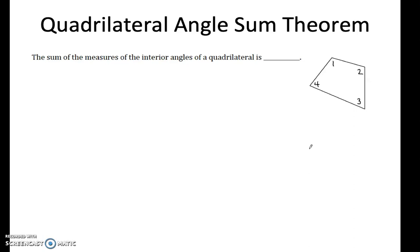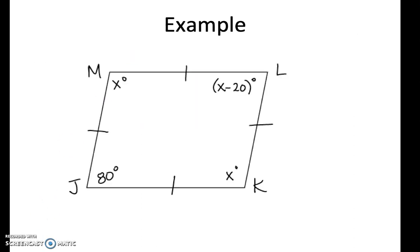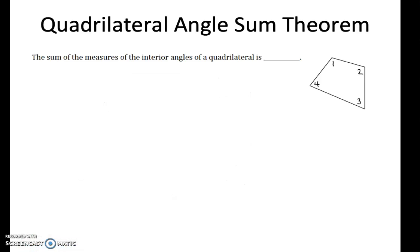One of the most important theorems that works for all quadrilaterals—whether you have a parallelogram, a kite, a rhombus, a square, a rectangle, or a trapezoid—is the sum of the four interior angles.